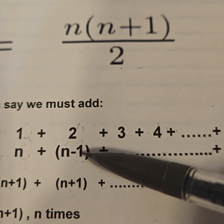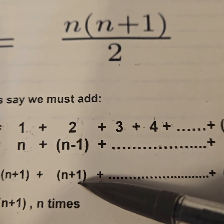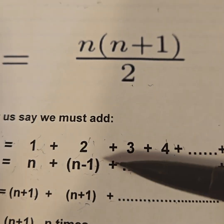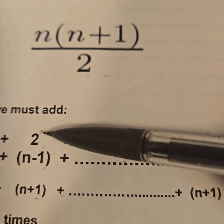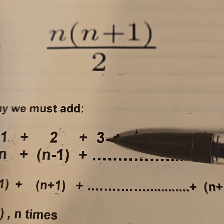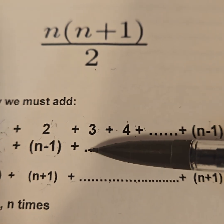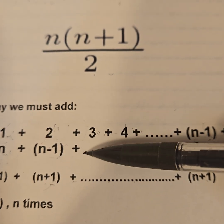2 + (n-1) is n+1. Now if you look, each time we go to the right, the one term will go up by one, the other one will go down by one. That means the total added together will stay the same.